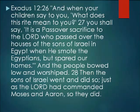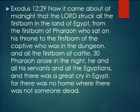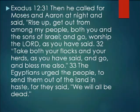Verse 28: 'The sons of Israel went and did just as the Lord had commanded Moses and Aaron.' Now it came about at midnight that the Lord struck all the firstborn in the land of Egypt — from the firstborn of Pharaoh on his throne to the firstborn of the captive in the dungeon, and all the firstborn of cattle. Pharaoh arose in the night, and there was a great cry in Egypt, for there was no home where there was not someone dead. Then he called for Moses and Aaron and said, 'Rise up, get out from among my people — both you and the sons of Israel — and go worship the Lord as you have said.'